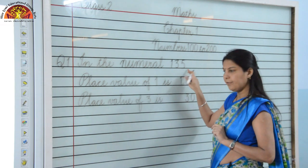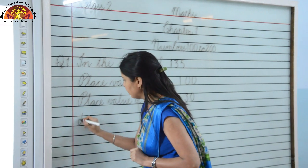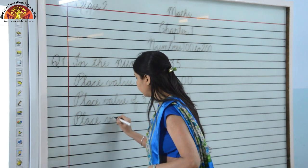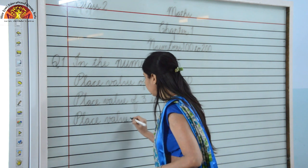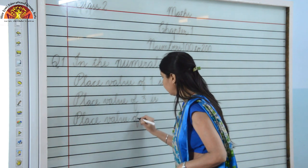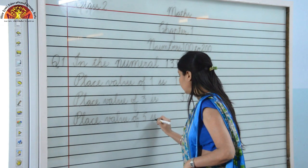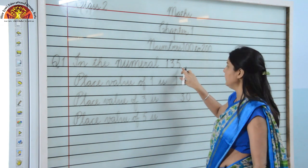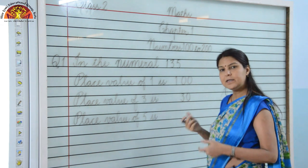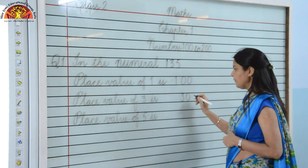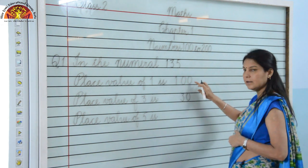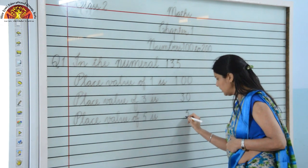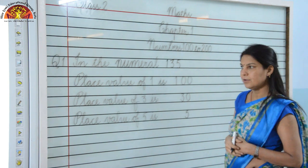Now we have to tell the place value of 5. Children, as you know, we will start counting from here. 5 is at the 1's place. So the place value of 5 is 5. We will write it where the 1's digit is counted, below the zeros. So this is the answer for 135.